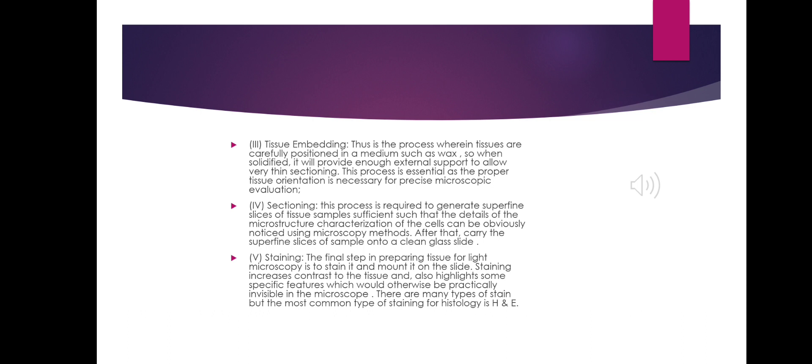Step 4: Sectioning. This process is required to generate superfine slices of tissue samples such that the details of the microstructure and characterization of the cells can be clearly observed using microscopy methods. After that, carry the superfine slices of the sample onto a clean glass plate.